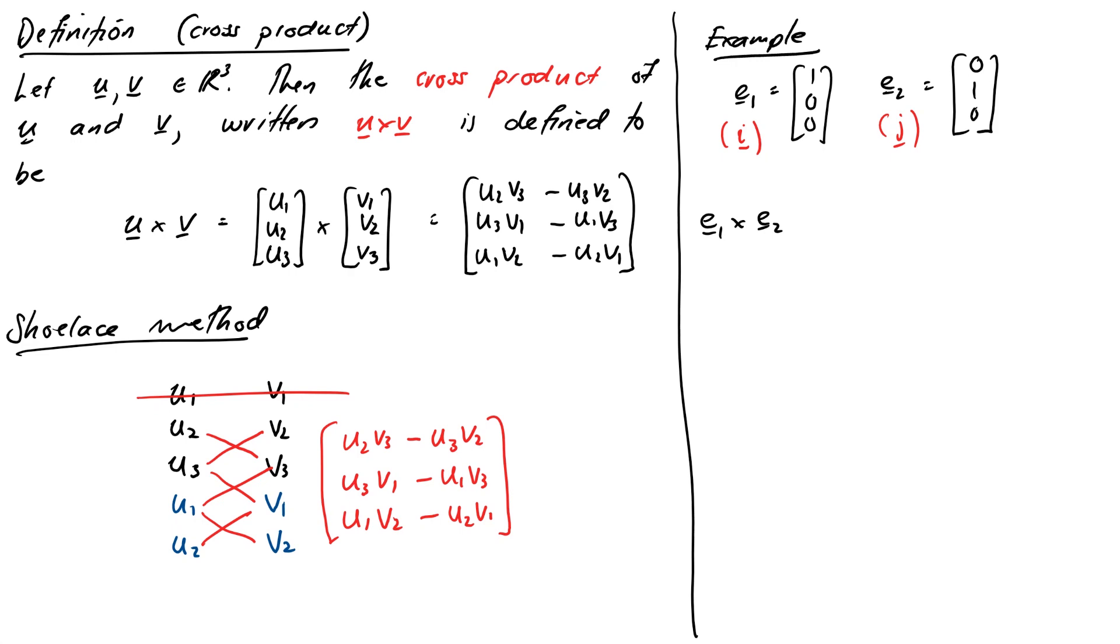Now let's figure out their cross product. So we'll do our shoelace method again. (1, 0, 0) cross (0, 1, 0). Off to the side we'll go 1, 0, 0. Repeat the first two entries, 1, 0. And 0, 1, 0. Repeat the first two entries, 0, 1. And that equals, going to cross out the first line, first shoelace gives a 0. The second shoelace also gives 0. And then we get a 1 for the final shoelace. 1 times 1 minus 0 times 0.